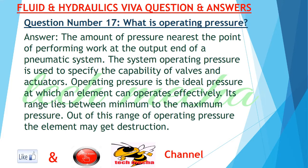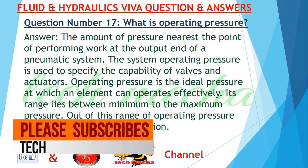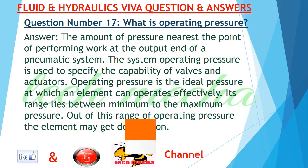The system operating pressure is used to specify the capability of valves and actuators. Operating pressure is the ideal pressure at which an element can operate effectively. Its range lies between minimum to maximum pressure. Outside this range of operating pressure, the element may get damaged.